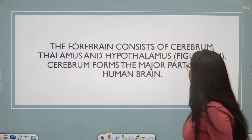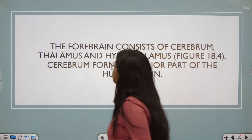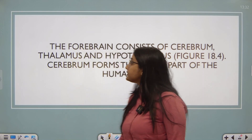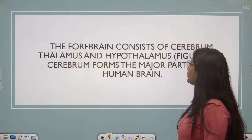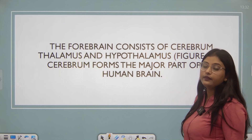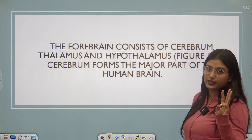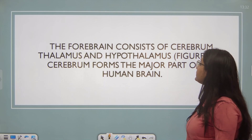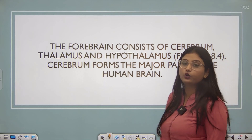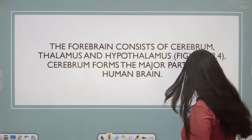The forebrain consists of three parts: cerebrum, thalamus and hypothalamus. Cerebrum forms the major part of the human brain.